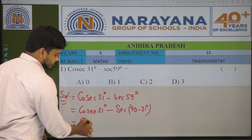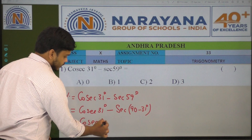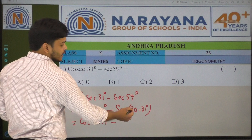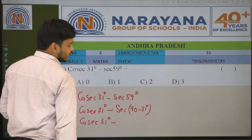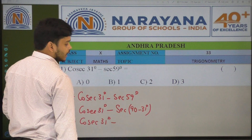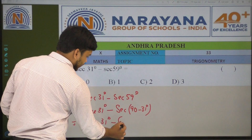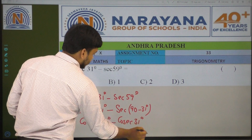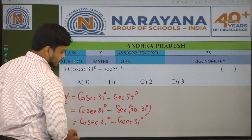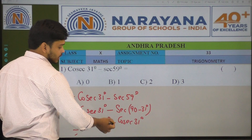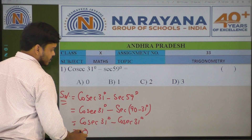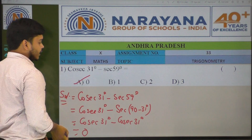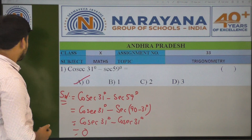Cosecant 31 degrees minus secant of (90 minus 31) degrees. Secant(90 minus 31) equals cosecant 31 degrees. So cosecant 31 degrees minus cosecant 31 degrees equals 0. Option A.